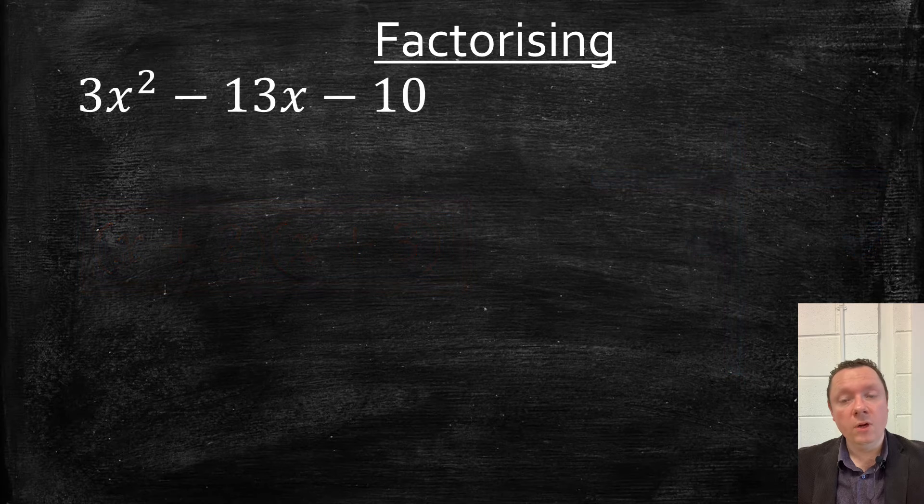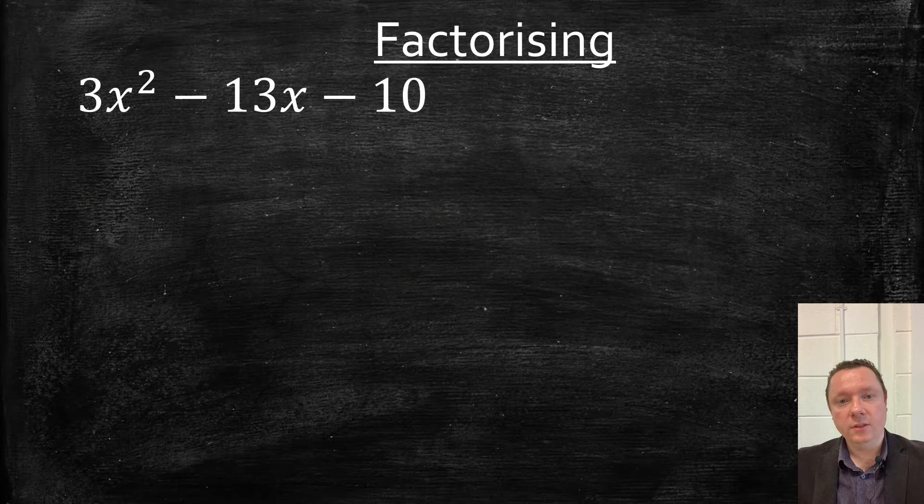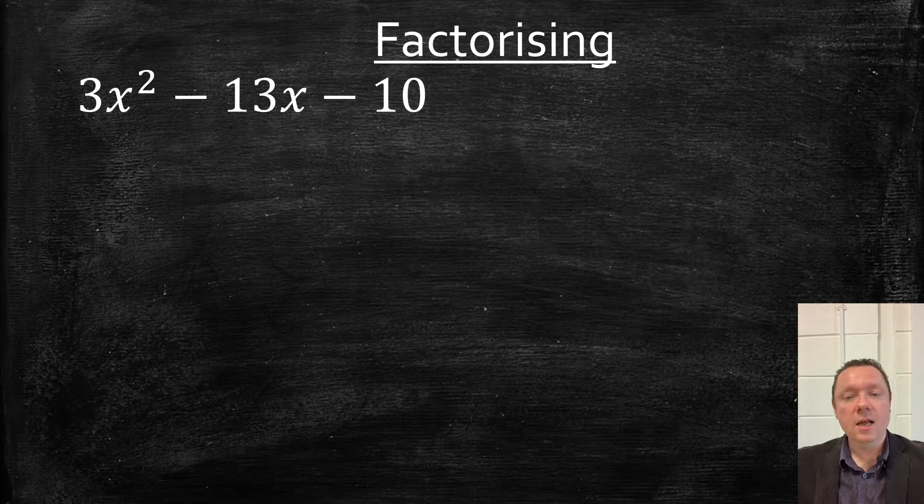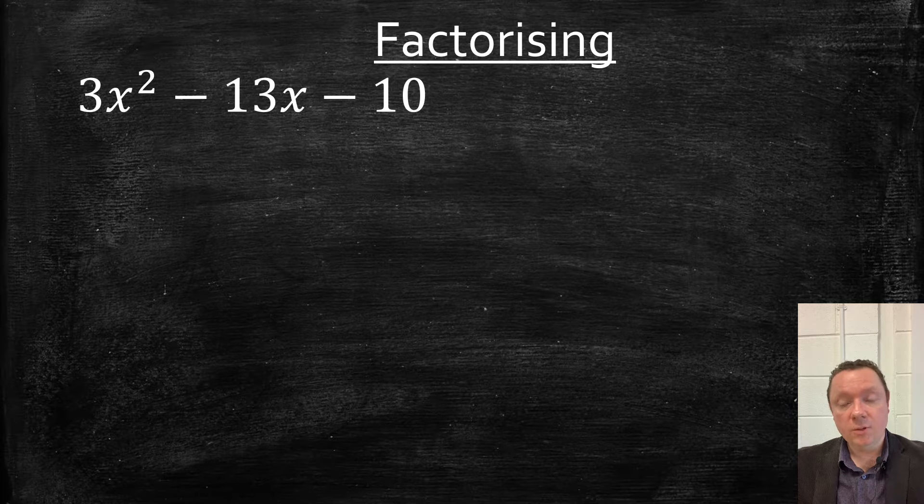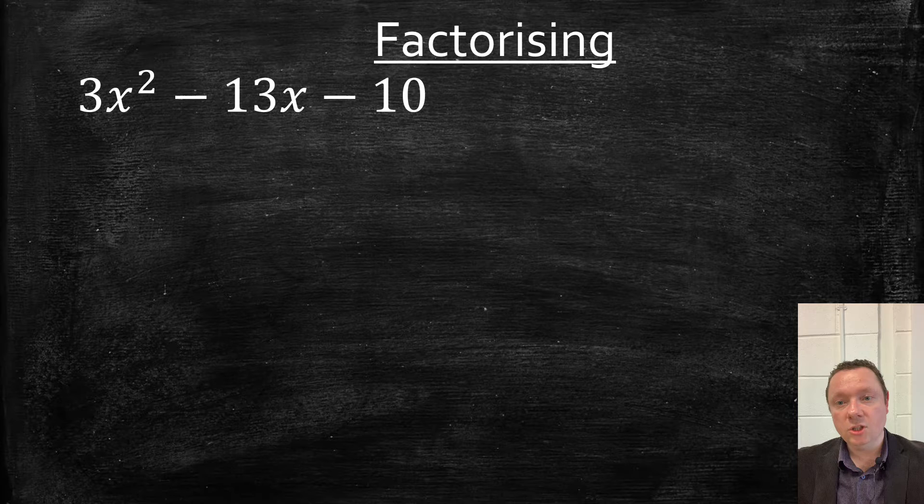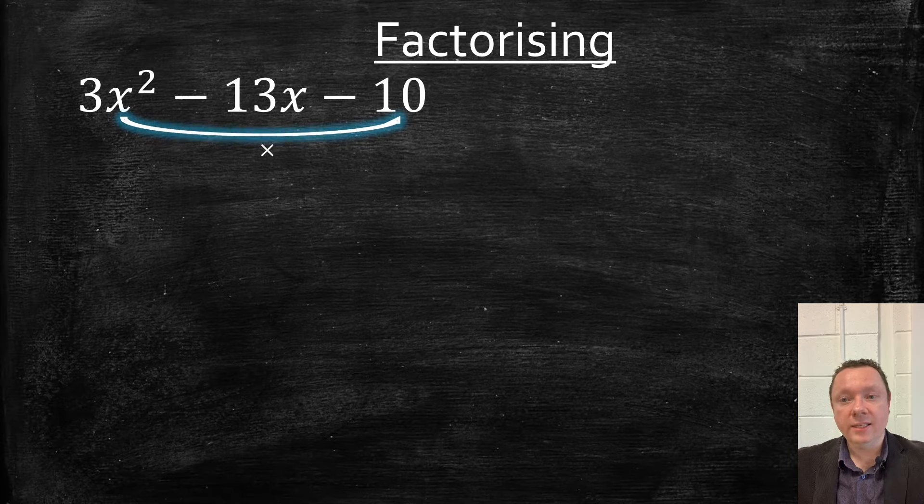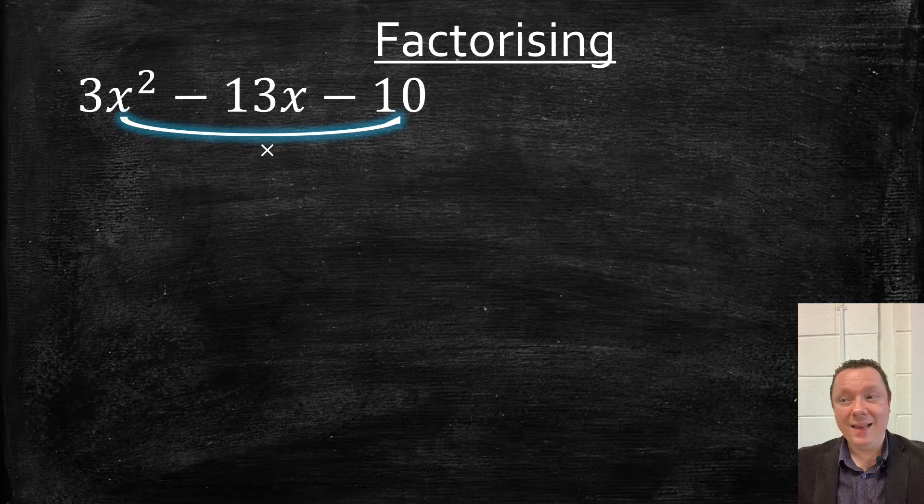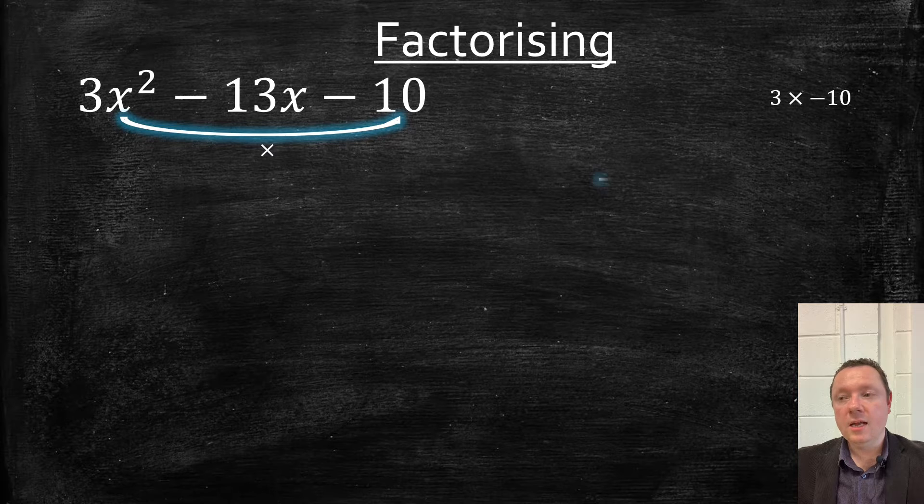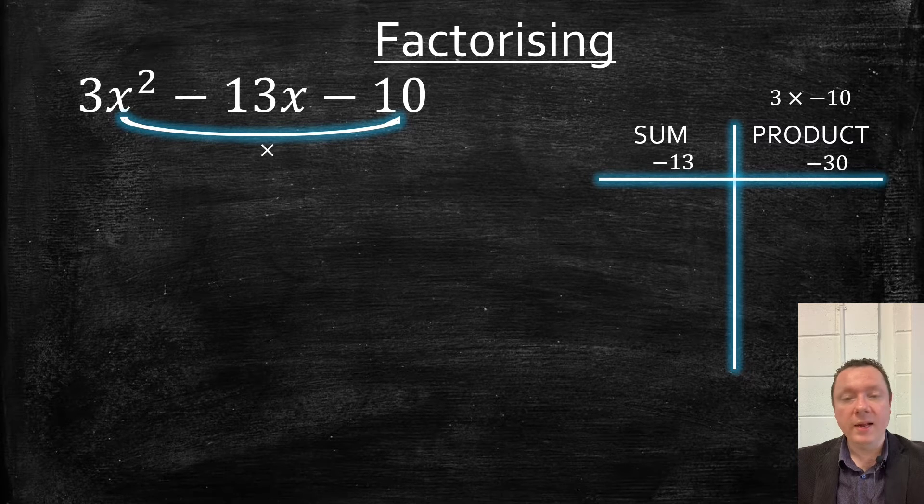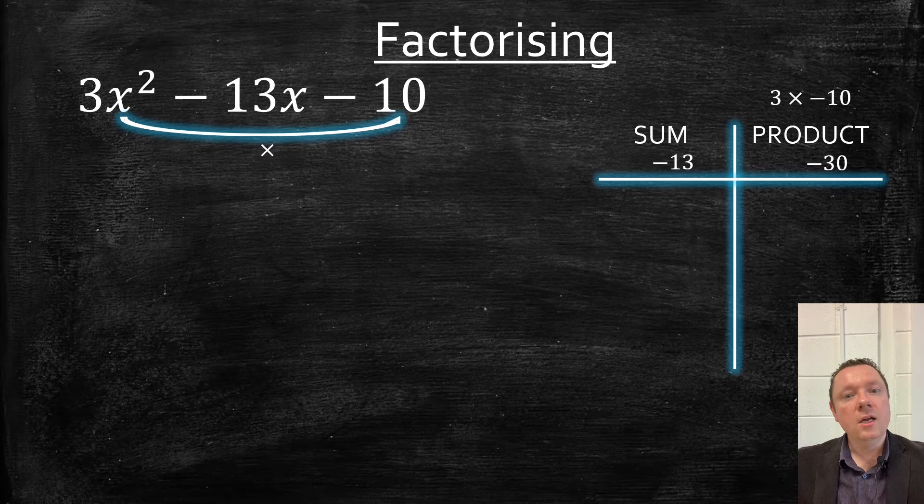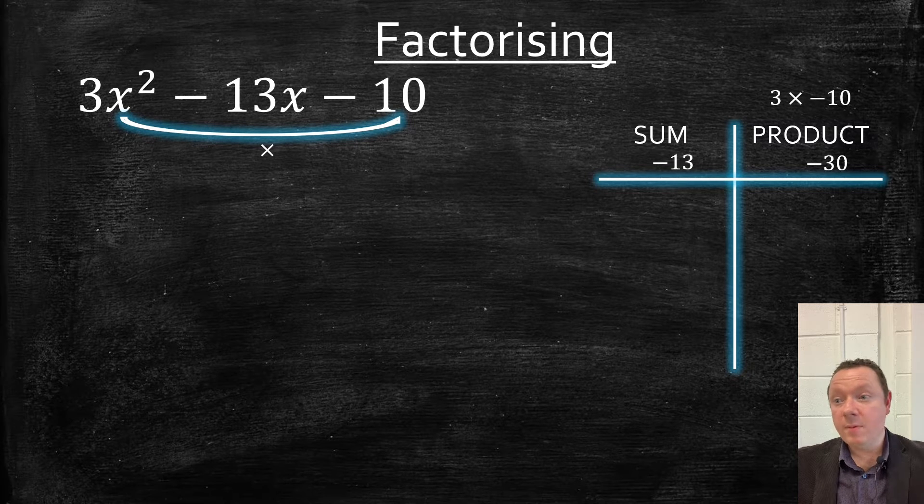Okay, a trinomial where there's a number in front of x squared, and that's the coefficient of x squared. Start off the same way. We're looking for a sum and a product. But this time, our product is the first number times the last number, 3 times 10. So that's minus 30 as our product. And our sum is still the middle number, minus 13. So starting with minus 30, just do it in order and you'll get the answer.